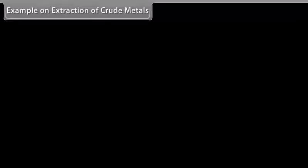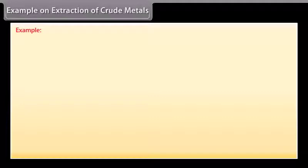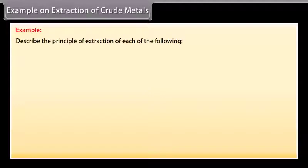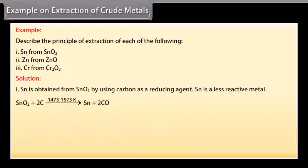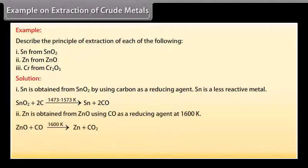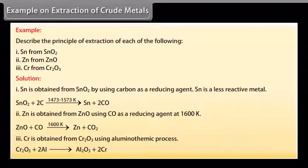Example on extraction of crude metals. Let's take an example on extraction of crude metals. Describe the principle of extraction of each of the following: Sn from SnO2, Zn from ZnO, Cr from Cr2O3. Solution: Sn is obtained from SnO2 by using carbon as a reducing agent. Sn is a less reactive metal. Zn is obtained from ZnO using CO as a reducing agent at 1600 Kelvin. Cr is obtained from Cr2O3 using aluminothermic process.